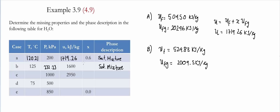The value provided for internal energy, 1600, is between these two limiting values, which indicates that the phase is a saturated mixture. Using the provided internal energy value and UF and UFG, we find the quality by solving x equals U minus UF divided by UFG. Substituting these values, quality is equal to 0.535, and that's the value we substitute in our table.